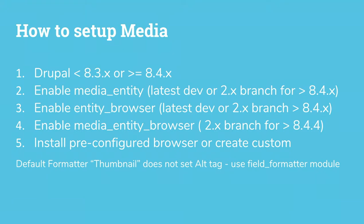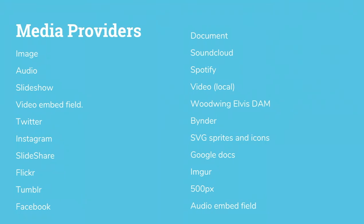A nice tip: the default formatter — the thumbnail — doesn't have an alt tag, so there is a module that will help add that. There are also modules that will create bundles for you. These cover everything from Google Docs and other content types to file assets on the server, video, and third-party social media sites like Instagram and Twitter — really showing how all-encompassing the media module can be.